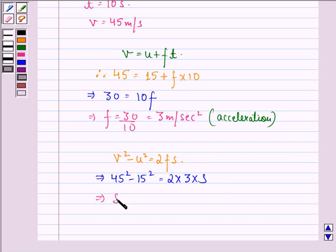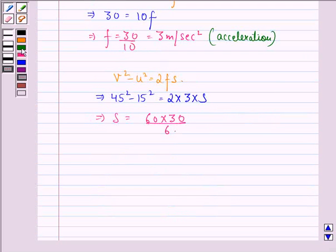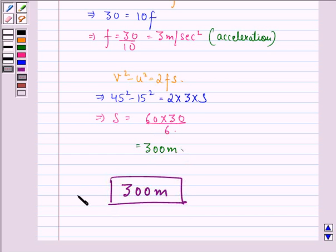This implies s = (60 × 30)/6 = 300 meters. So our answer is that the distance covered by the body is 300 meters. I hope you understood the solution and enjoyed the session. Have a good day.